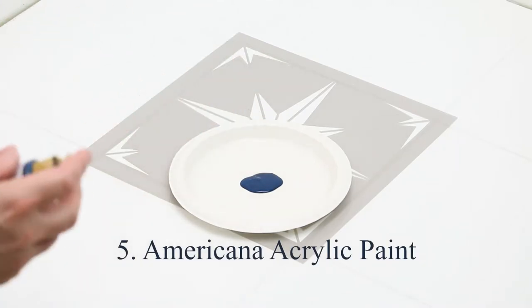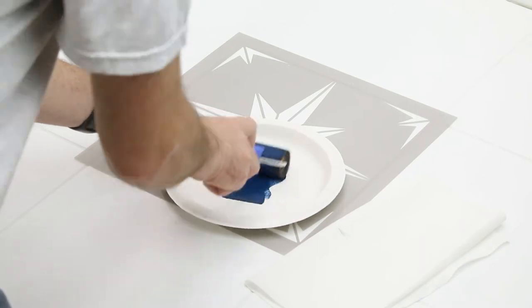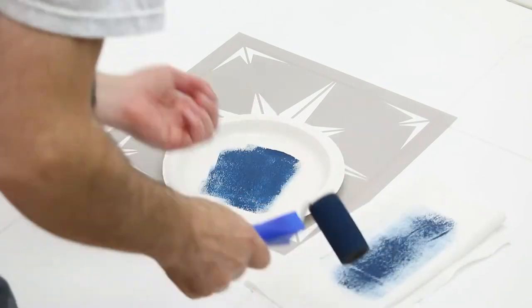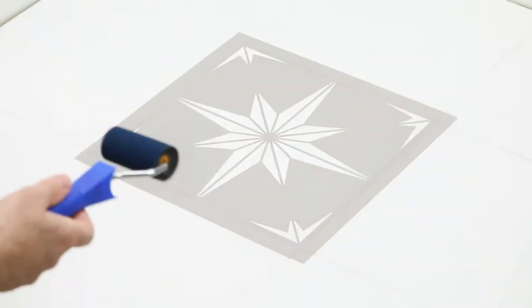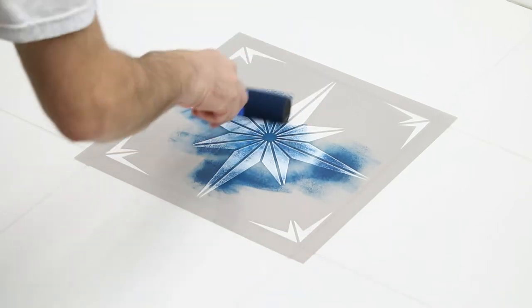Use Americana acrylic paint to create your stenciled pattern. Soak the high-density foam roller thoroughly with paint and then remove excess paint on a stack of clean paper towels. Too much paint on the roller will result in paint bleeding underneath the stencil.